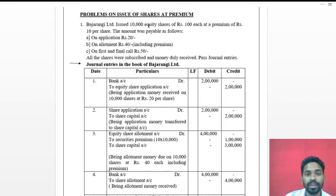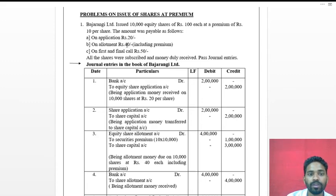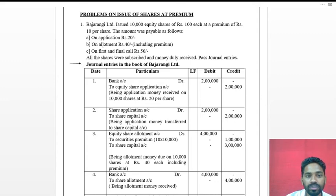The equity share price is rupees 100. Let us verify: 20 plus 40 plus 50 equals 110, so the extra 10 rupees is the premium. The premium is collected at allotment — the allotment amount should be rupees 30 for capital, plus rupees 10 premium, giving rupees 40 total.